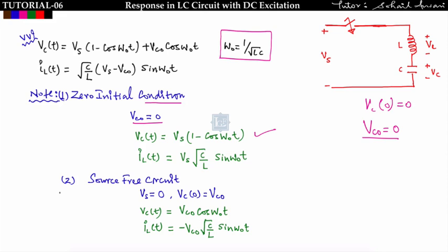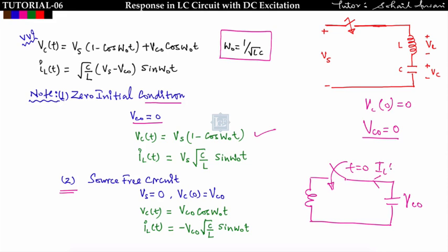Case 2: source-free circuit. The capacitor is initially charged to VCₒ by some external source, connected with the inductor, and the switch closes at t equals zero. Here Vs equals zero. Putting Vs equals zero: VC(t) equals VCₒ·cos(ω₀t), and IL(t) equals minus VCₒ·√(C/L)·sin(ω₀t). The minus sign appears because in the original circuit current flows left to right, but when the source is removed and the terminal is short-circuited, current flows right to left.